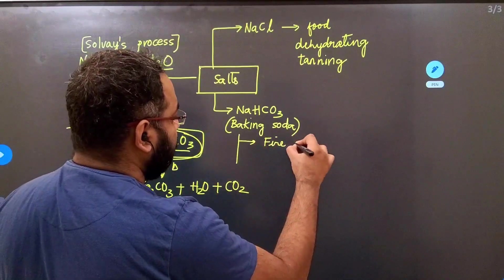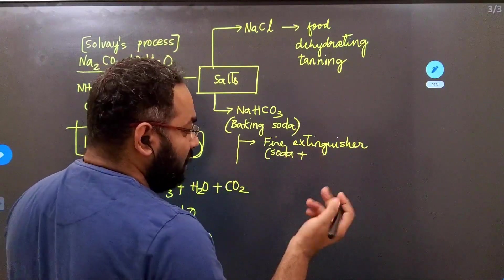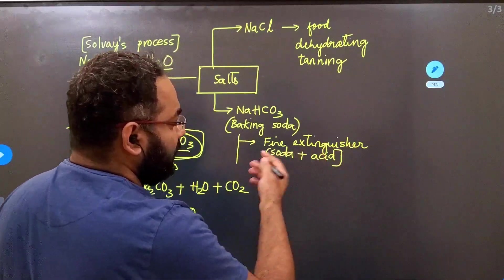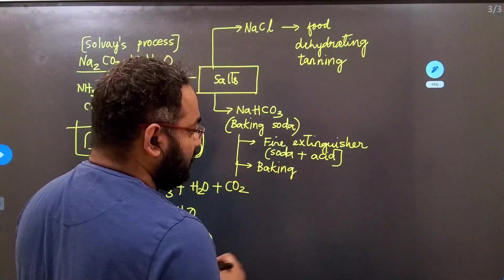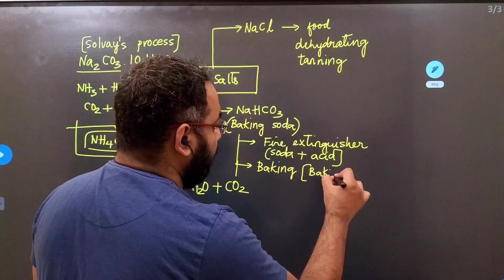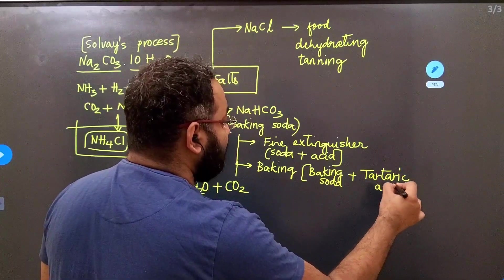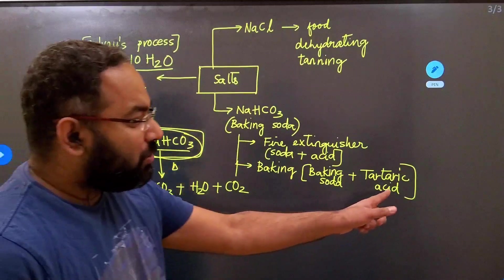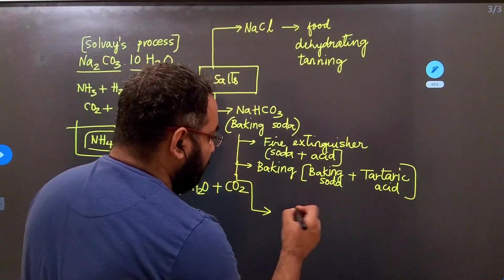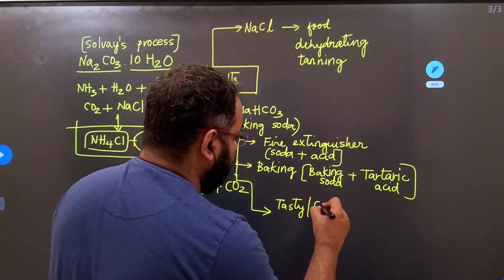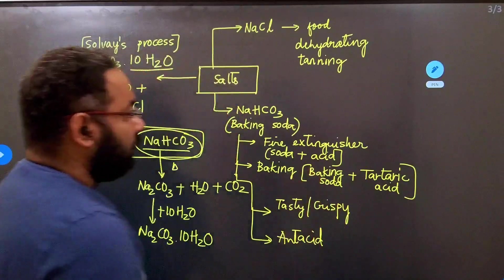Some of the uses of baking soda: it can be used in a fire extinguisher. What fire extinguisher is this? This is a soda acid fire extinguisher. So you use baking soda plus you use sulfuric acid and you get a soda acid fire extinguisher. The other thing is it can also be used in baking cakes or in the baking industry, where along with baking soda you also add a little bit of tartaric acid to remove the bitterness caused by baking soda when you add it to the cake. This neutralizes the bitter taste that you add to the cake. Finally, another major use is you can make tasty crispy food and in case you get an upset stomach because of that, you can also use this as an antacid.